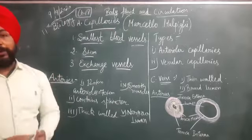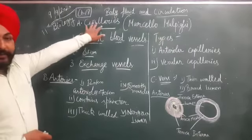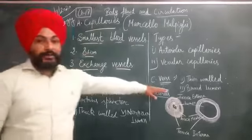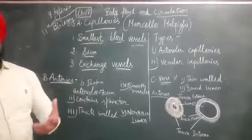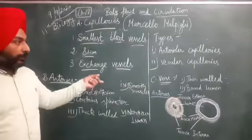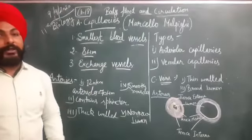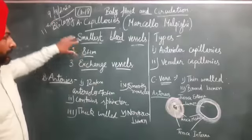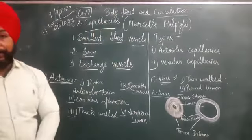There are three kinds of blood vessels: capillaries, arteries, and veins. These three blood vessels help to transport or circulate the blood flow to the body. So let's start with the first blood vessel, known as the capillaries.